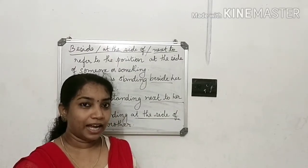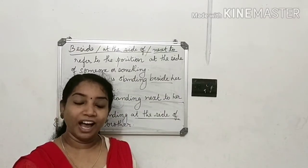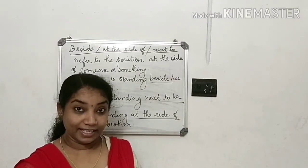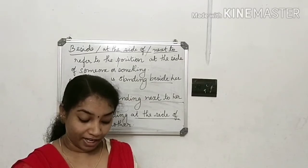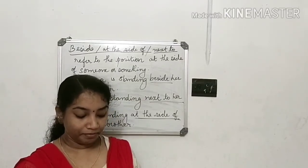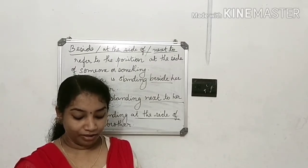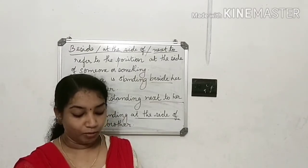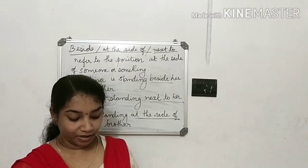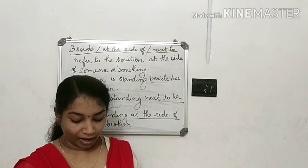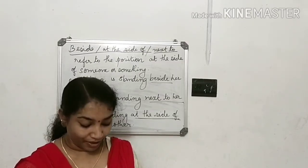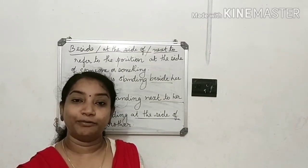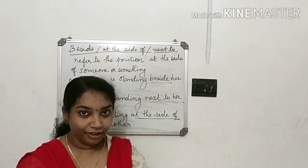Next: where is the owl standing? It is between the boxes. Next: where is the owl? It is behind the box. Next, D: where is the owl? It is below the box. Next: the owl is moving around the box. And the last one: the owl is standing in front of the box.